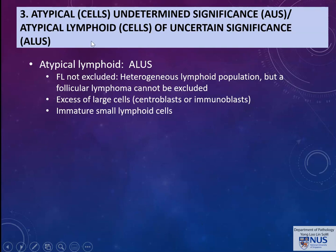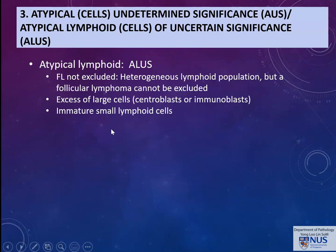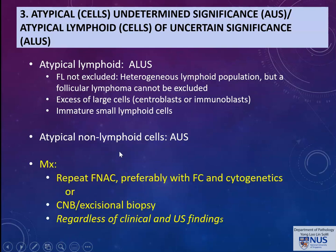Moving to the atypical category, which is subdivided into two: atypical lymphoid cells of uncertain significance (ALUS), used when lymphoma cannot be excluded — for example, follicular lymphoma cannot be excluded, or there are too many large cells or immature small lymphoid cells — and atypical non-lymphoid cells (ANLUS), where metastatic malignancy is not excluded. Management is to repeat FNAC with flow cytometry and cytogenetics, or to proceed to a larger biopsy such as core needle or excision biopsy. Regardless of clinical or ultrasound findings, an atypical category finding should prompt further investigation with tissue biopsies.